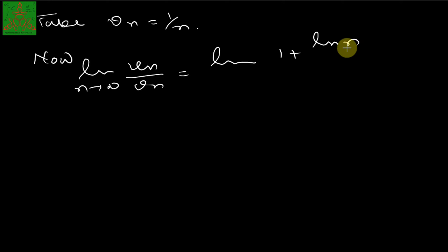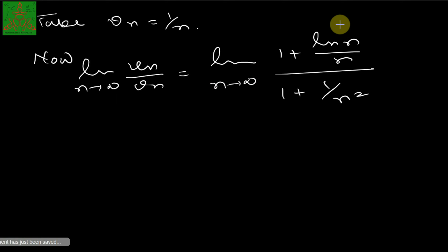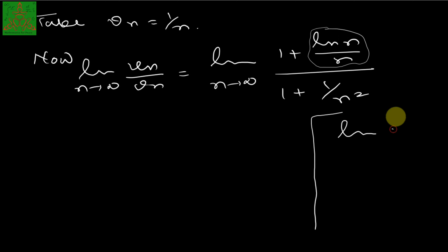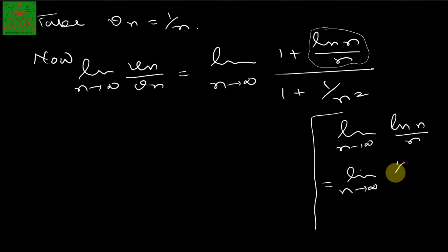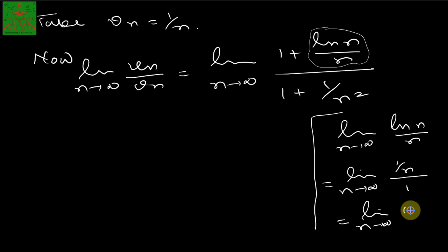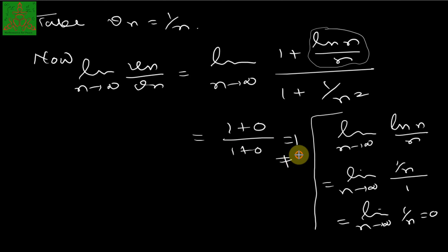We compute the limit of u_n / v_n as n → ∞. After the 1/n cancellation, we need the limit of (1 + ln n)/( 1 + 5/n²) · 1 ... specifically, the limit of ln n / n as n → ∞. This is ∞/∞ form, so we apply L'Hôpital's rule: derivative of ln n is 1/n, derivative of n is 1, giving limit 1/n → 0.